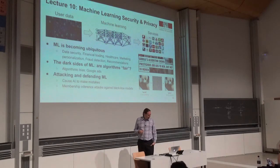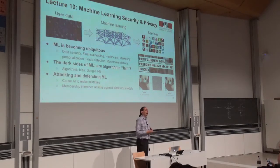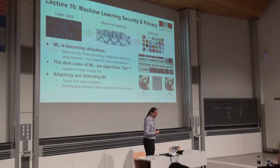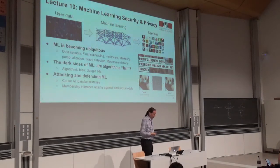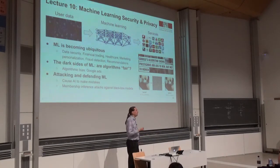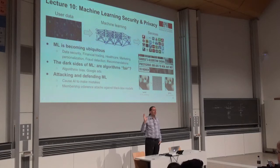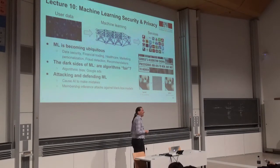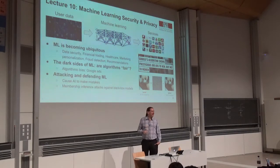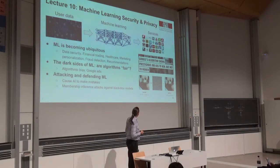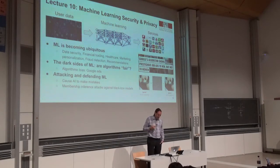We'll look into how some of those anonymization attacks work and what we can potentially do to protect against them. We'll get into machine learning and the security and privacy issues it brings up. Machine learning is increasingly used everywhere — most of you have taken or will take a machine learning course. It's a very powerful and important technique, but it also has its dark sides. Every powerful force has a dark side and machine learning is definitely no exception.